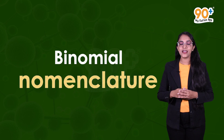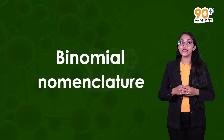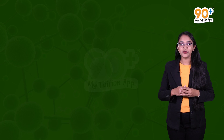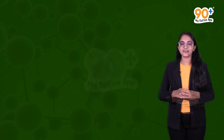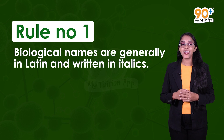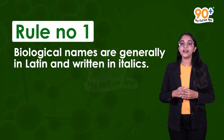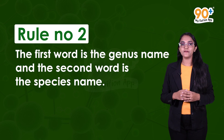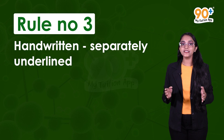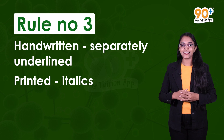Nomenclature simply means giving a name to an organism, and 'binomial' represents the two parts of the name. Let's look at the rules of binomial nomenclature. Rule one: biological names are generally in Latin and written in italics, whatever their origin — the name will be Latin-derived or latinized. Rule two: the first word of the scientific name is the genus name, and the second word is the species name.